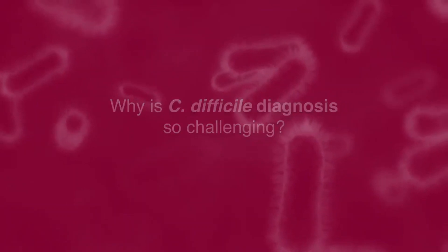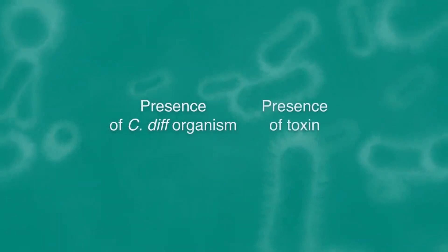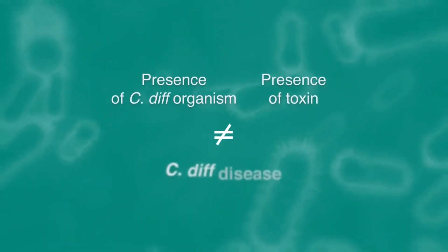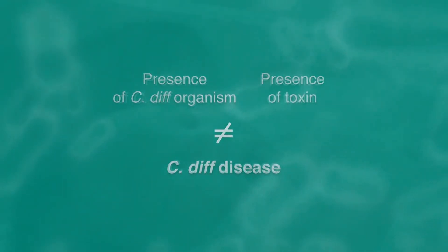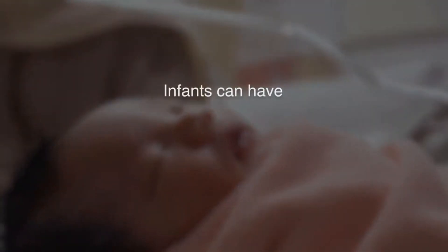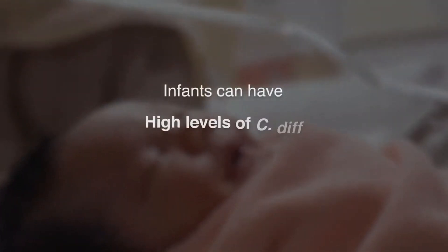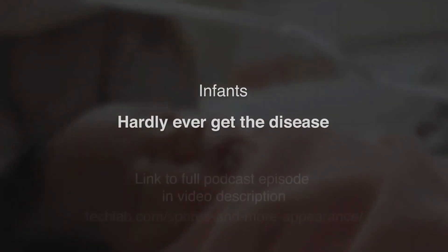The challenge is that the presence of the organism and/or the presence of the toxin does not mean that you have C. diff disease. The example that's typically used: infants can have high levels of C. diff organism and high levels of C. diff toxins A and B, but they hardly ever get the disease.